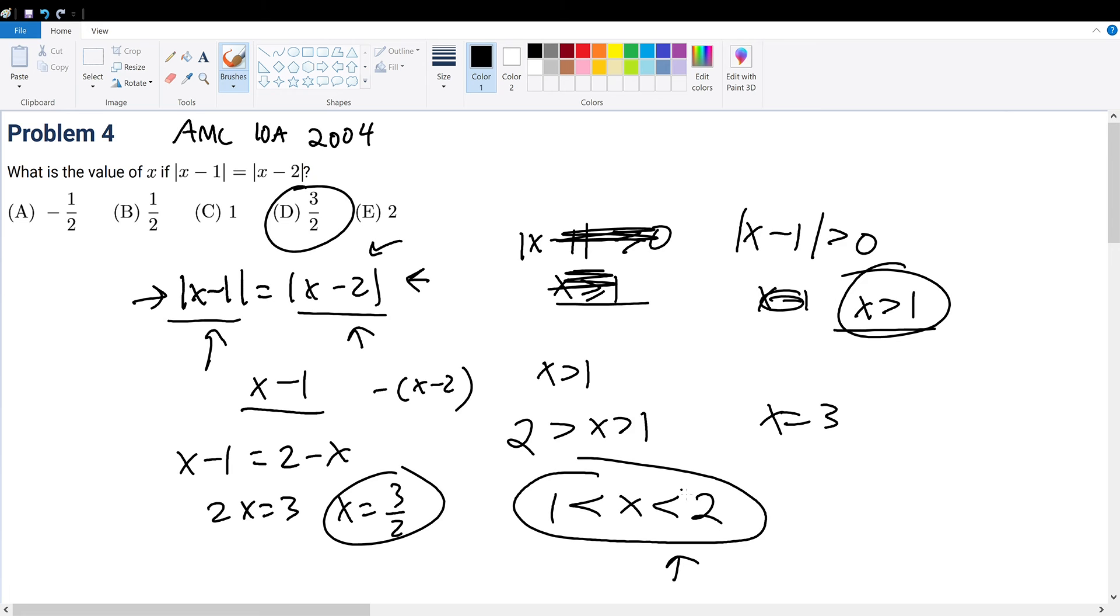But we are not done yet because this is a very specific range. What about the ranges outside of this range? For example, x is greater than or equal to 2 or x is less than or equal to 1. Well, if x is greater than or equal to 2, then that must mean that this will be either 0 or positive. So x minus 2 will be positive. But if it's also greater than or equal to 2, that means the left-hand side will also be positive.